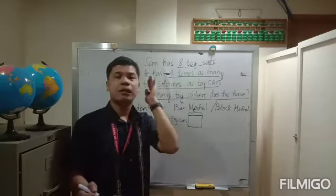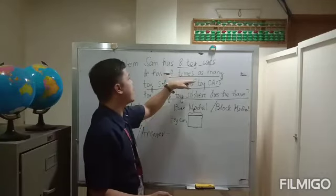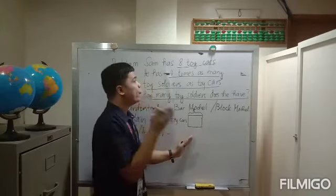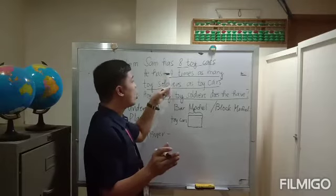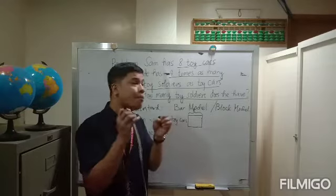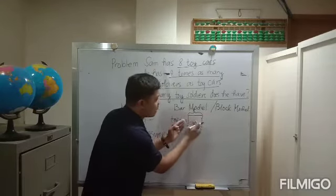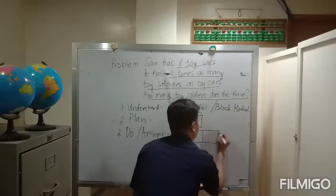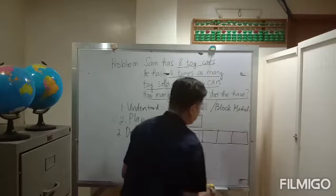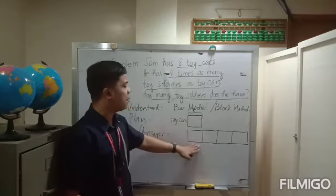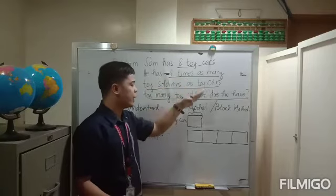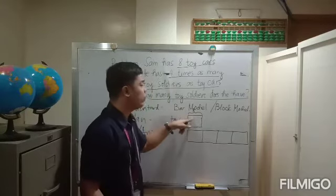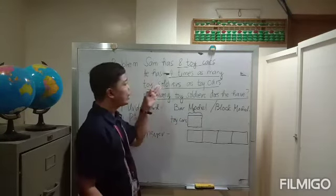The next given is four times as many toy soldiers as toy cars. So we draw more units or boxes — the same size as the first bar — to represent the toy soldiers. I've drawn four units of the same size for the toy soldiers. Each unit is the same size as the first unit for toy cars. I'll label this bar model as toy soldiers.